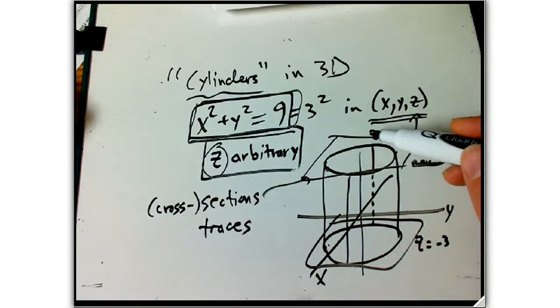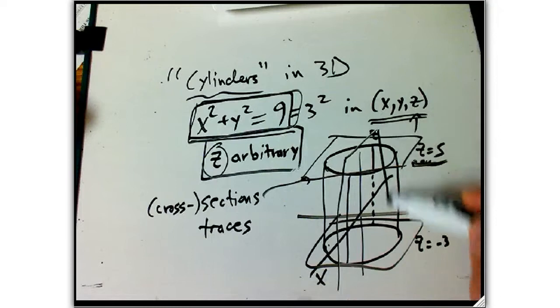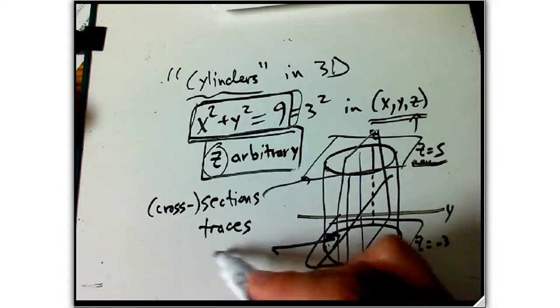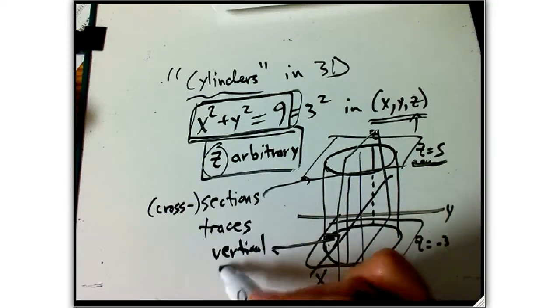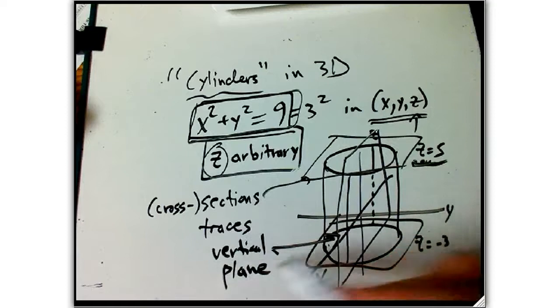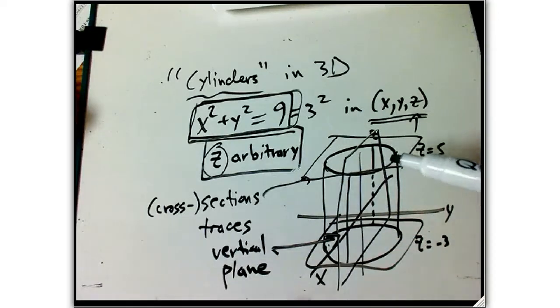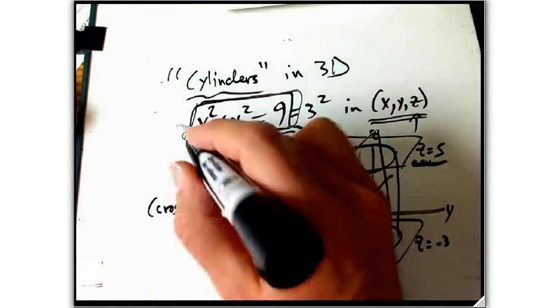But you can also look at what happens if you set x equals 0, or sorry, y equals 0. This is y equals 0. This vertical plane is y equals 0. And so that's going to be, let's look at what the equations say.